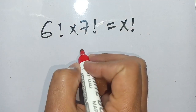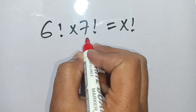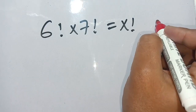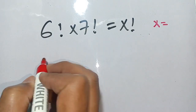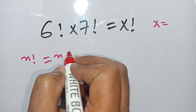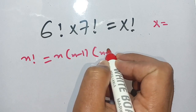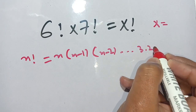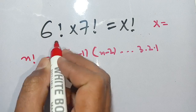Hello everyone. How to solve this factorial problem: 6 factorial times 7 factorial is equal to x factorial. We have to find the value of x which satisfies this equation. We know that n factorial is equal to n times n minus 1 times n minus 2, up to 3 times 2 times 1.